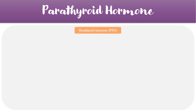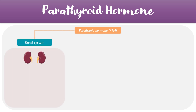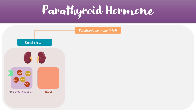It's worth taking a closer look at how exactly parathyroid hormone achieves its effects on the electrolytes, and it does this by acting on different systems within the body. The first system which parathyroid hormone acts upon is the renal system. When parathyroid hormone binds to its receptors in the distal convoluted tubules or the collecting ducts, it triggers the movement of calcium from the ducts back into the blood.